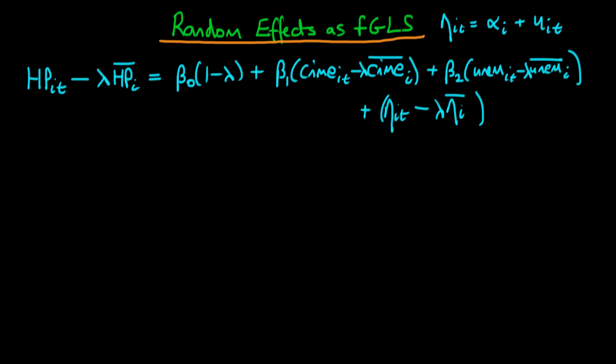In the last video we discussed what random effects estimation actually is, and we said that essentially what random effects estimation is, is to first of all transform the system using this parameter lambda and then just estimate pooled OLS on that transformed system.